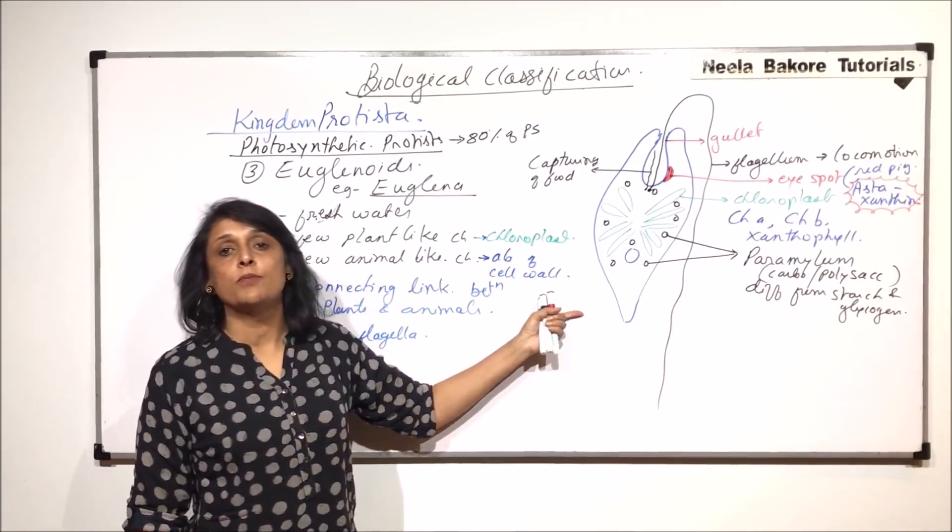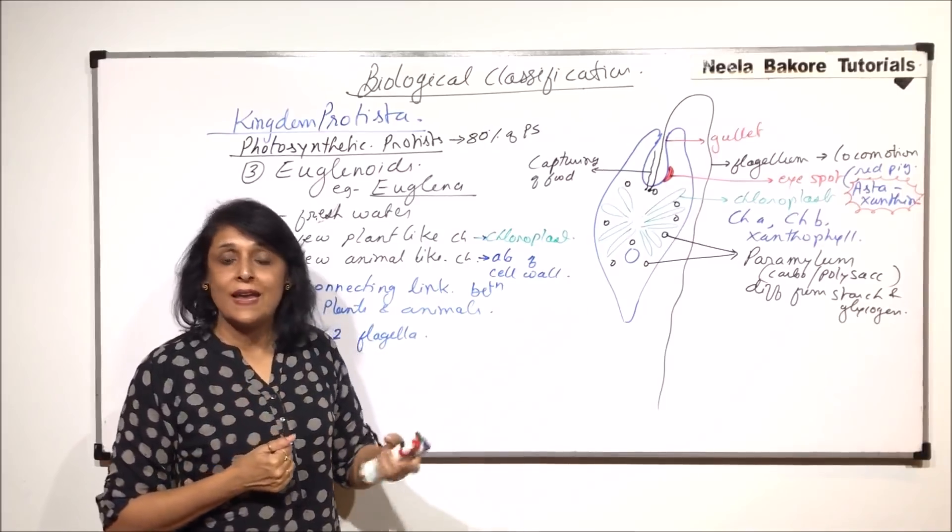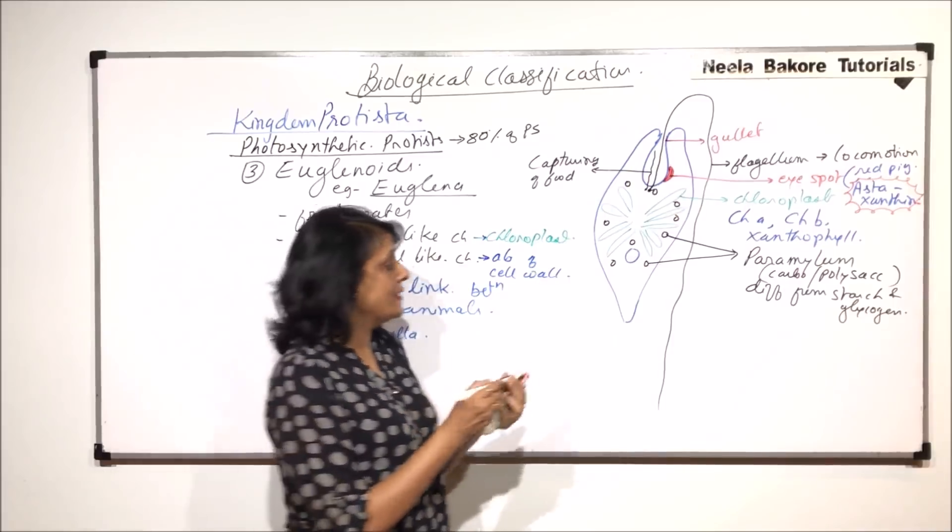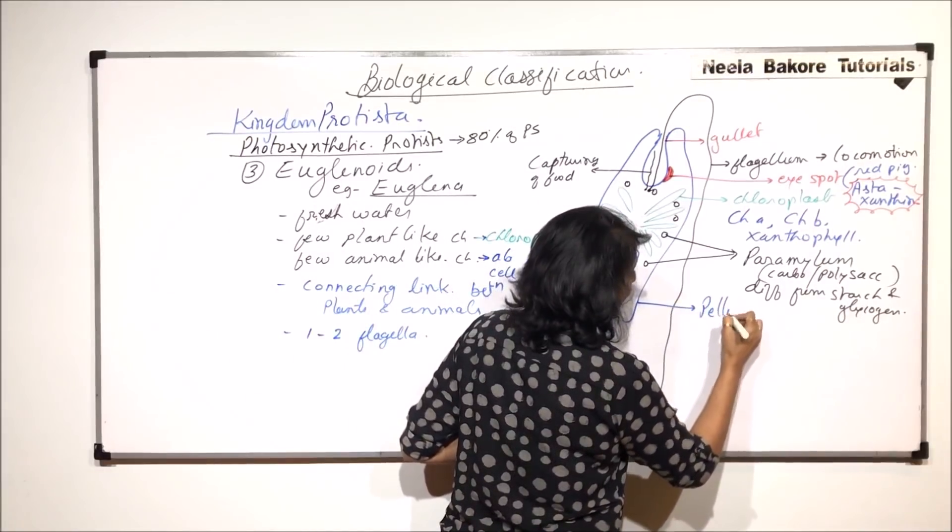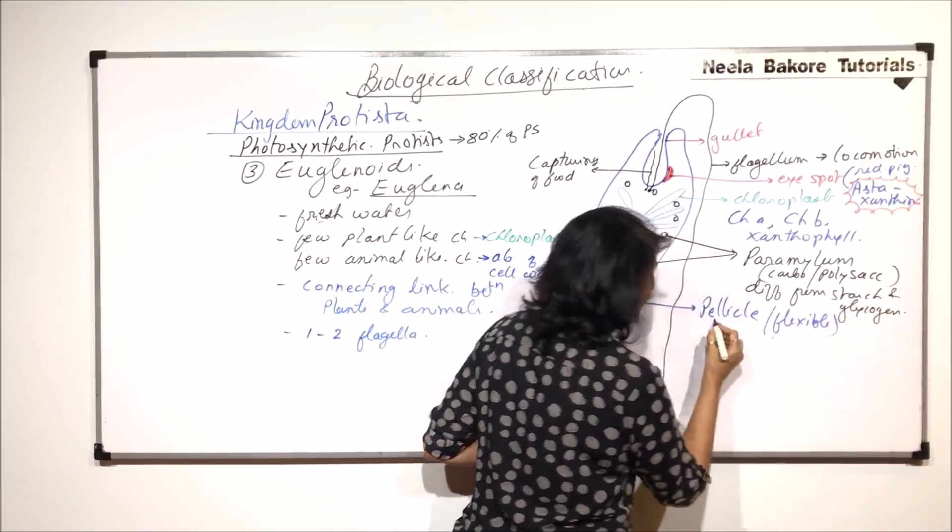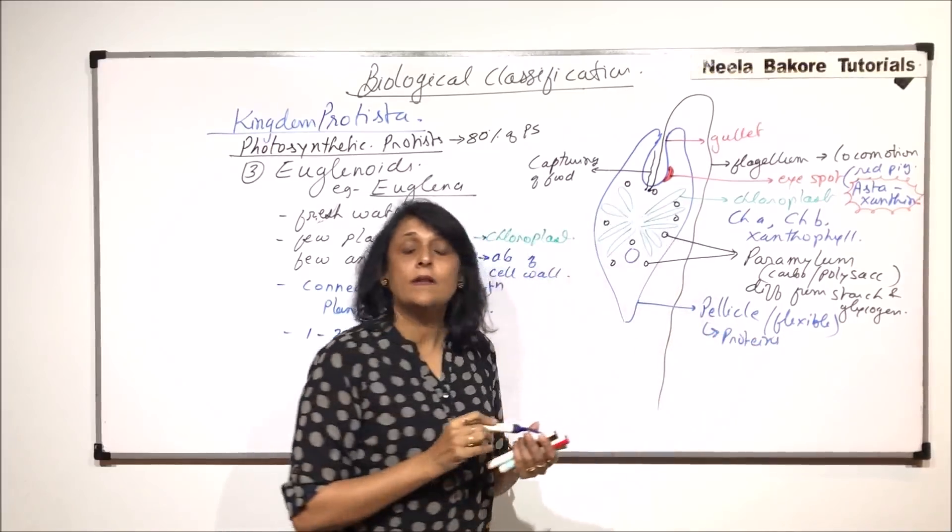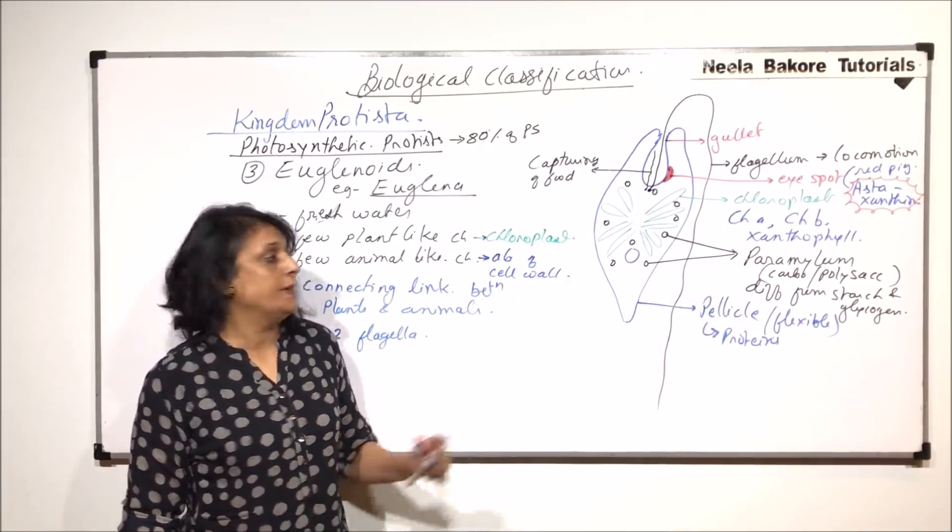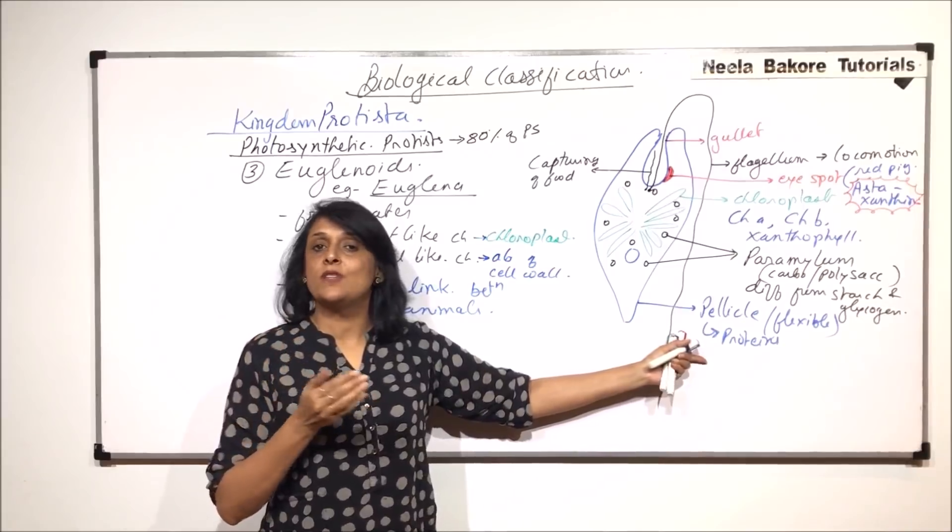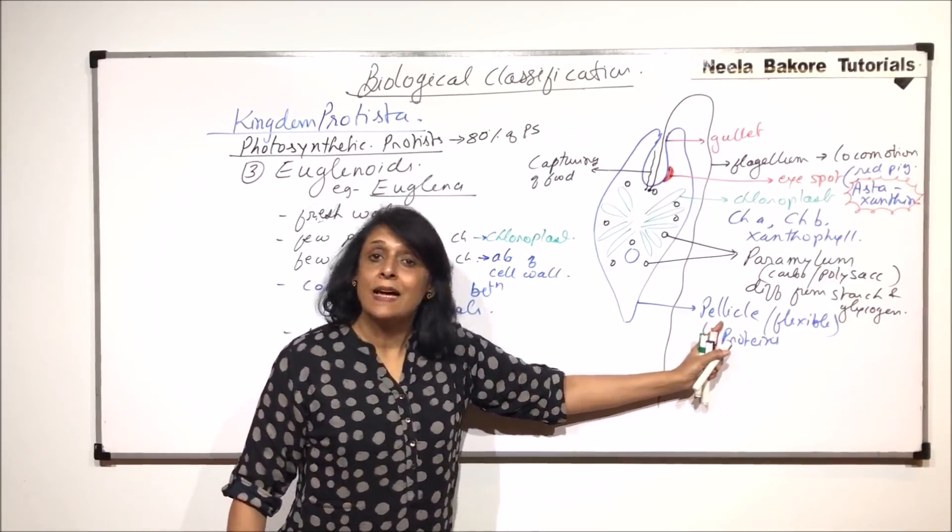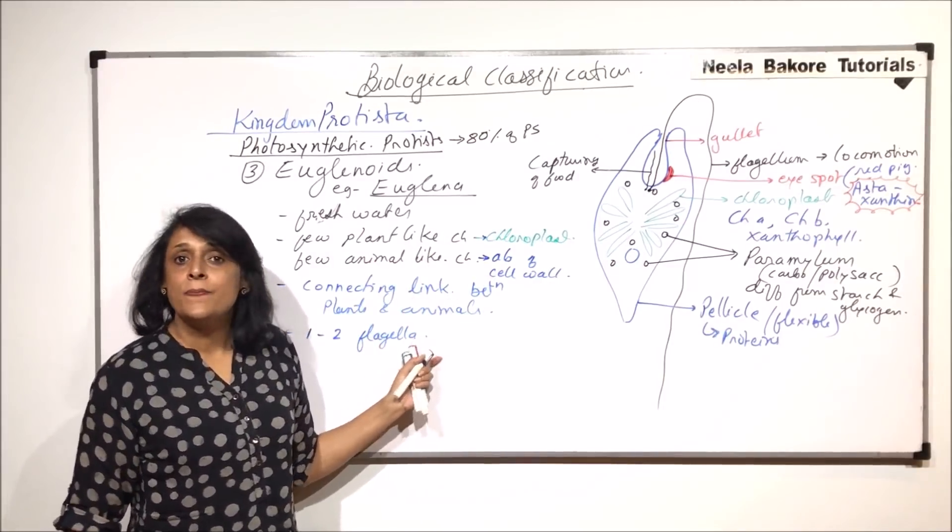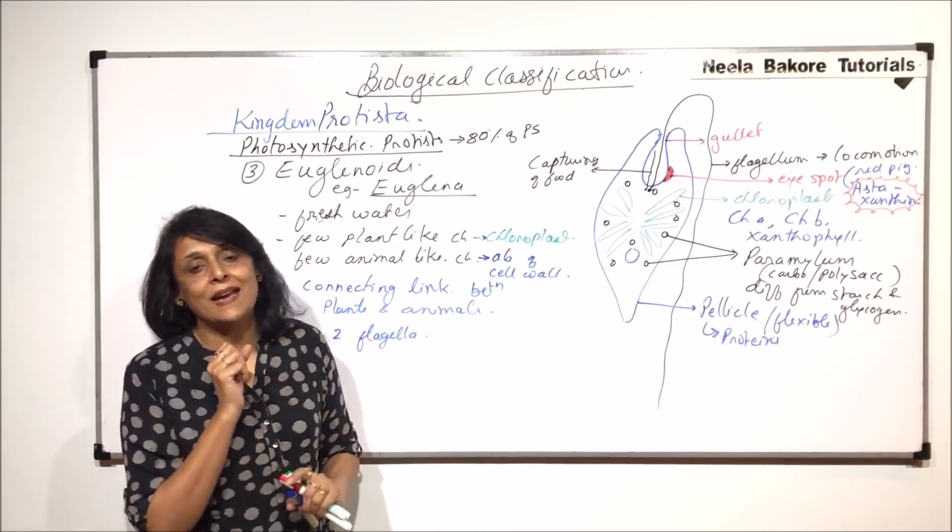As we have understood from this structure, there are certain properties which are like plants and certain characteristics like animals. We have written that they do not have cell wall. This outermost layer is known as pellicle, and this pellicle is a highly flexible membrane made up of only proteins. It is not a typical biomembrane made of proteins and phospholipids. In plants or animal cells, even if cell wall is present or absent, the plasma membrane is proteins and phospholipids. Here, the outermost layer is made of only proteins and is highly flexible.